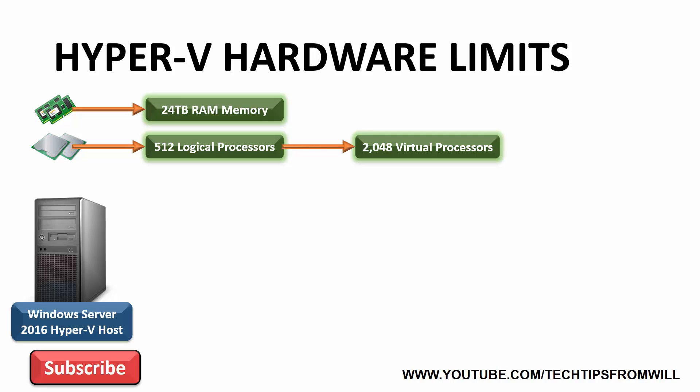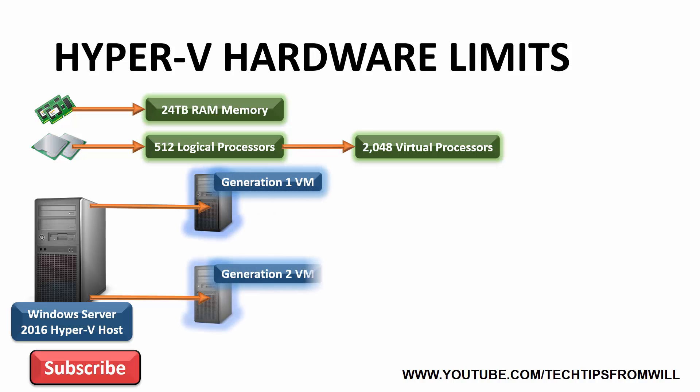In fact, it's hard to imagine a single host computer ever coming close to reaching these limits. With the host machines now covered, let's have a look at the scalability of virtual machines. Just like Windows Server 2012 R2, Windows Server 2016 Hyper-V allows the administrator to create two types of virtual machine: Generation 1 virtual machines and Generation 2 virtual machines.